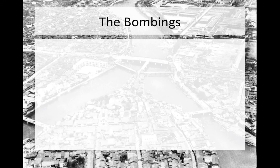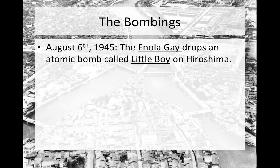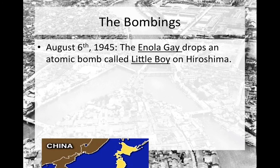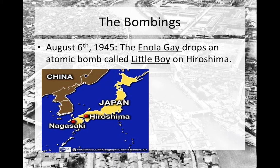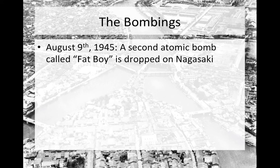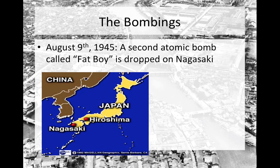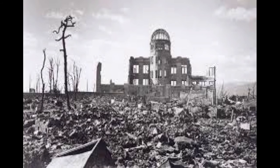Now for the final part of our agenda — the two atomic bombs were used. First, on August 6, 1945, a plane called the Enola Gay dropped an atomic bomb codenamed Little Boy on Hiroshima, Japan. It is estimated that around 70,000 people were killed. Three days later, on August 9, 1945, a second atomic bomb codenamed Fat Man was dropped on Nagasaki — accounts vary, but an estimated 40,000 people were killed. Here are two poignant photos of Hiroshima and Nagasaki during the bomb's aftermath.